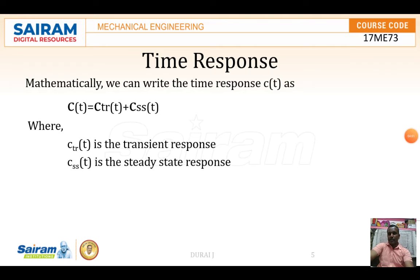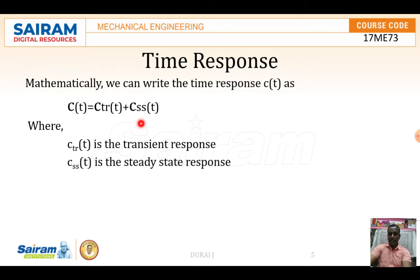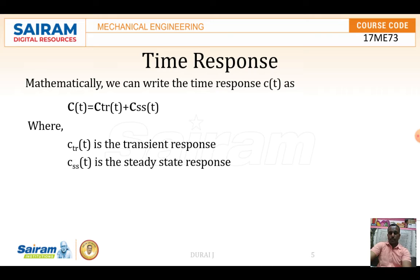Mathematically, the time response can be written as C(T) = C_TR(T) + C_SS(T), where C_TR(T) is the transient response and C_SS(T) is the steady state response in the time domain. Here T indicates the time domain while S indicates the frequency domain.